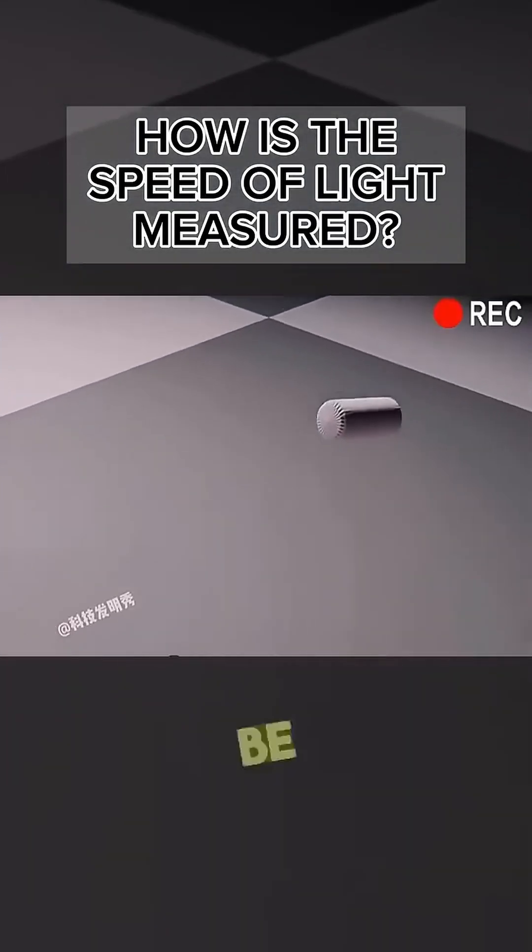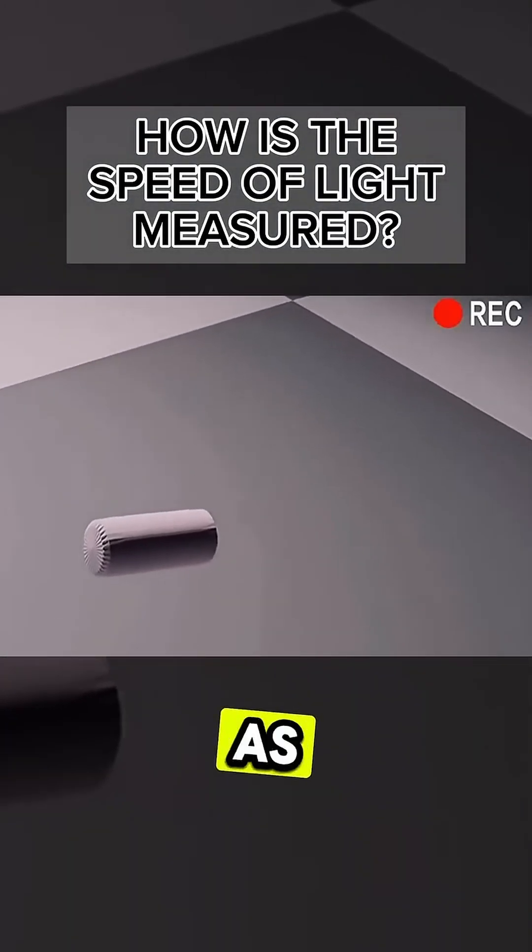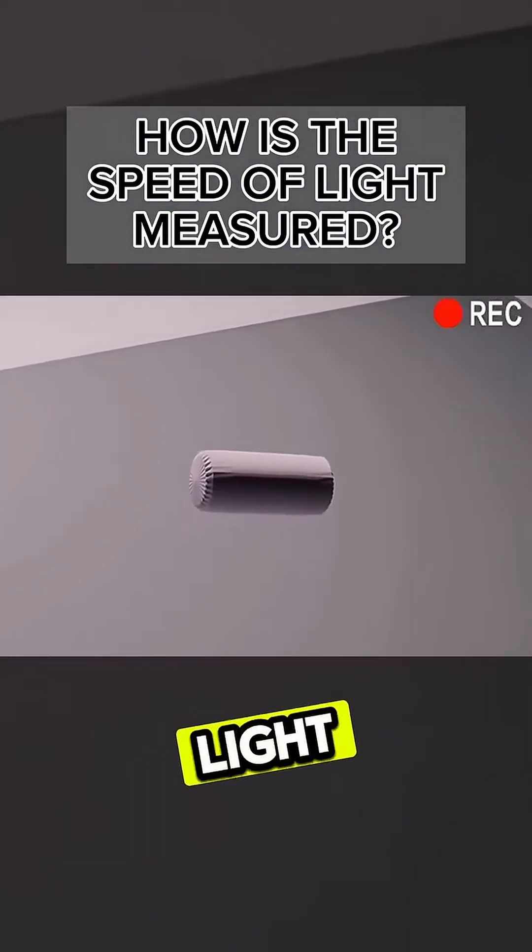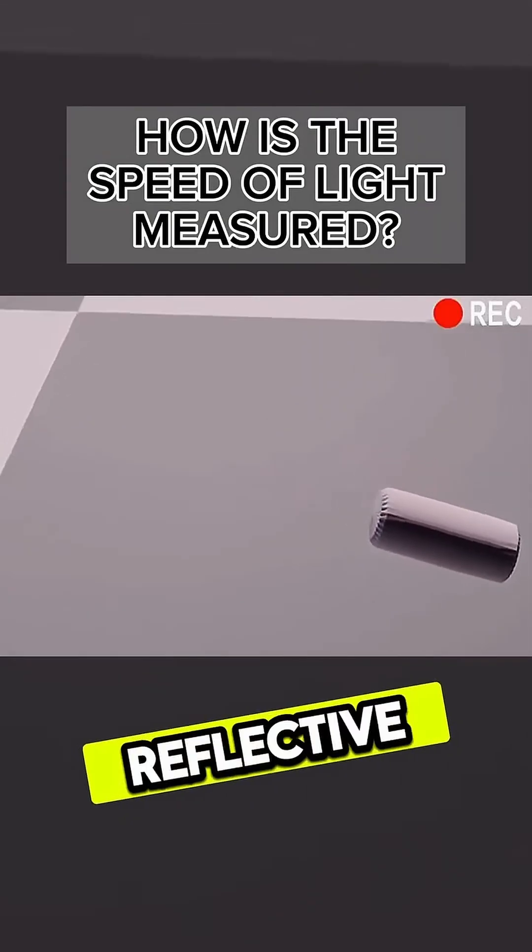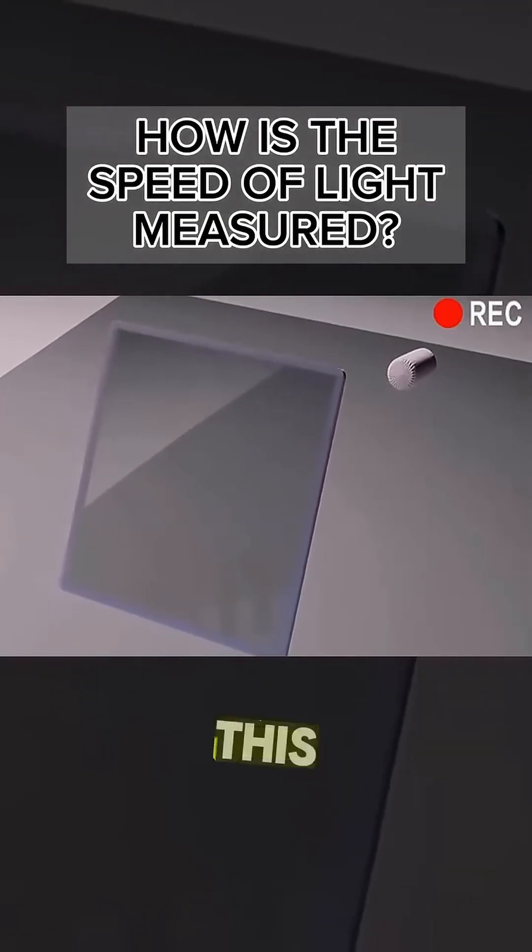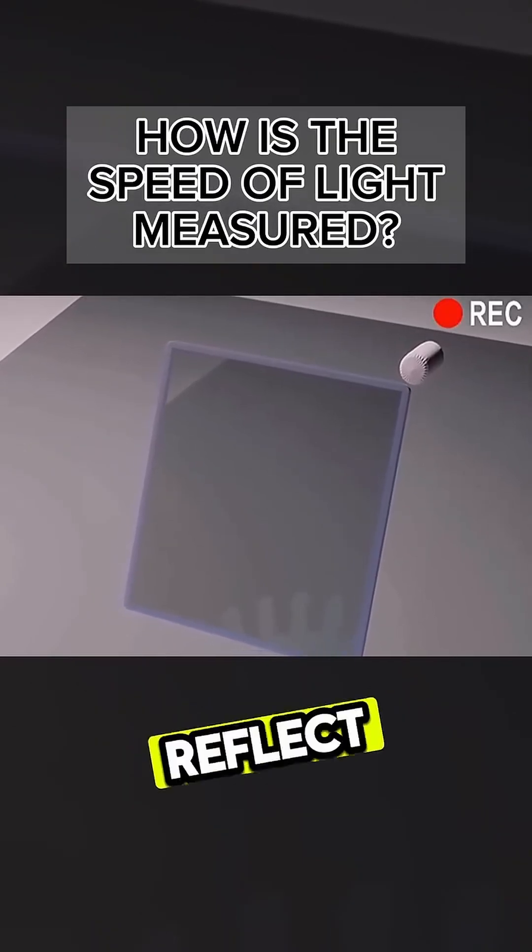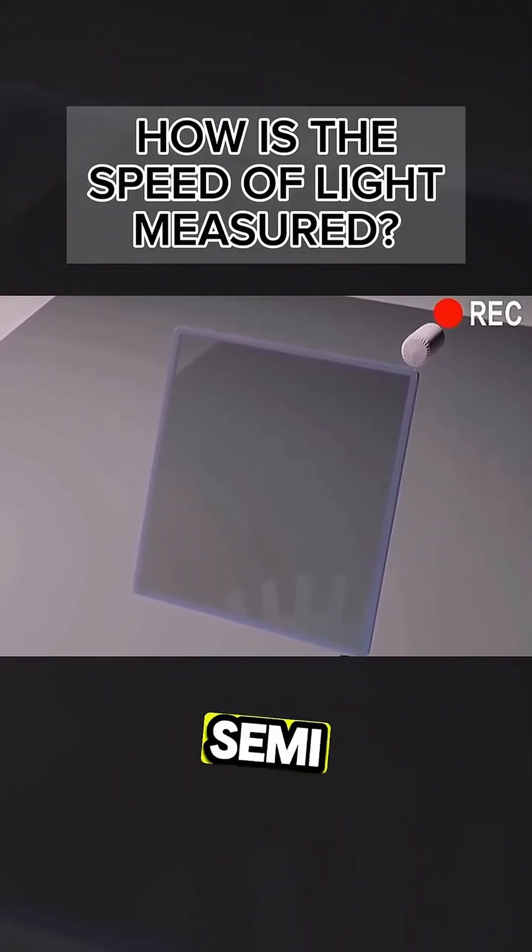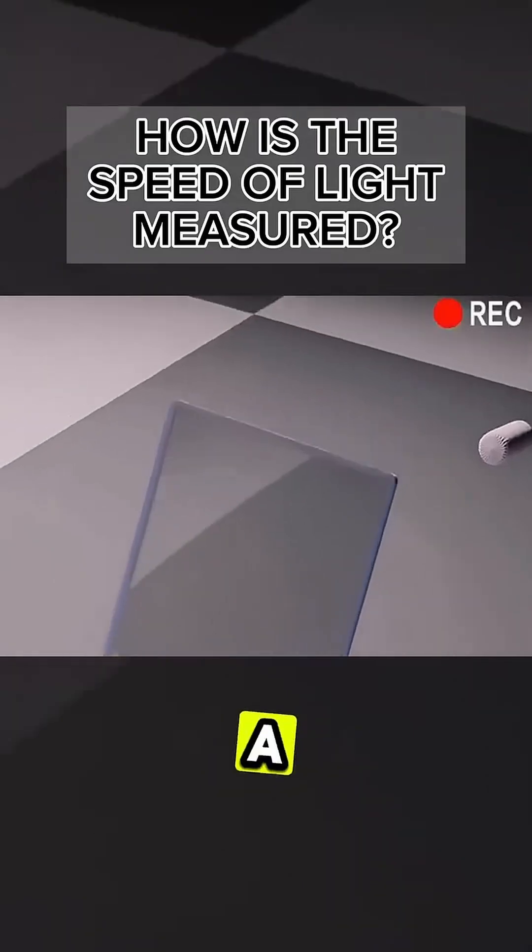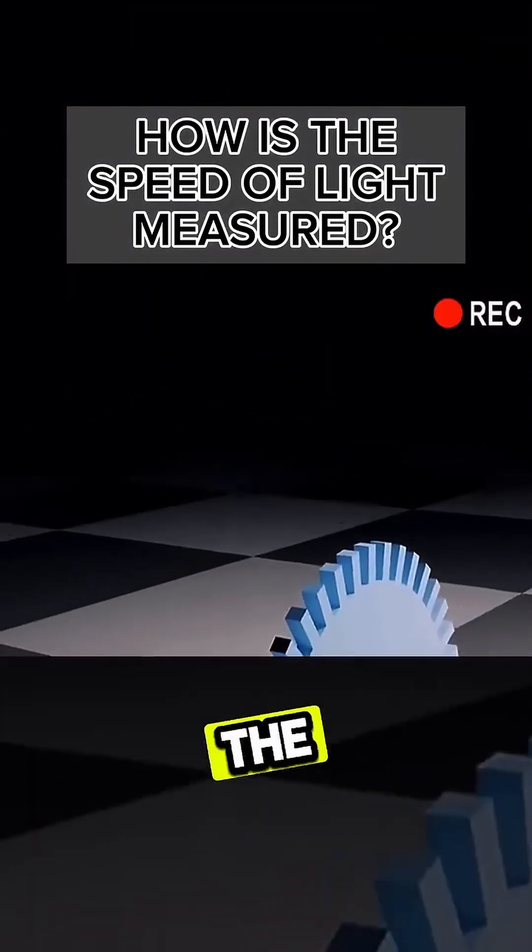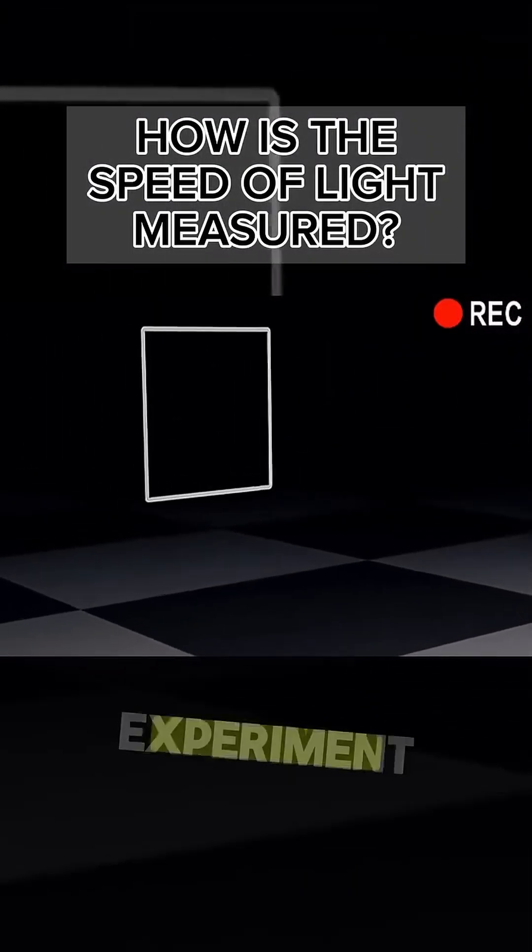Then we need a light source. It can be a light bulb or a candle, as long as it emits a beam of light. Next, we put a semi-reflective mirror in front of the light. This is a mirror that lets some of the light pass through and some of the light reflect back. Finally, we put a normal mirror on the opposite side of the gear, and we're ready to start the experiment.